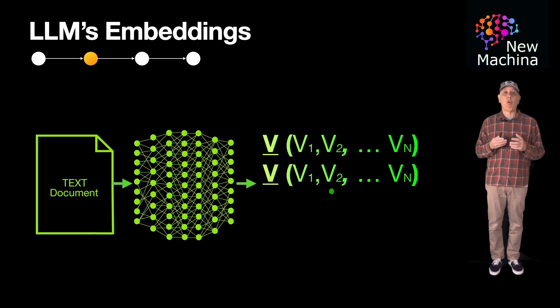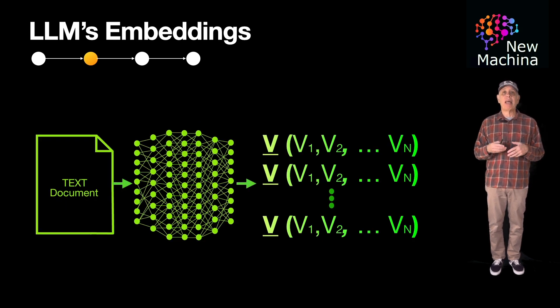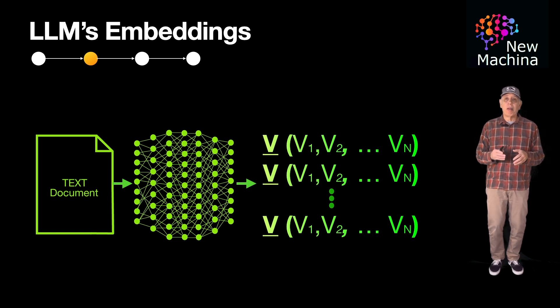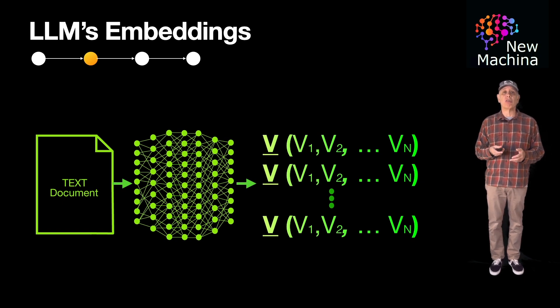LLMs can take in raw text and generate an embedding. In this example we show an LLM generated embedding for a text document. Quick note, although in this example we are shown an embedding being created for a text document, you can also create embeddings for sentences or even words. So how does this work?